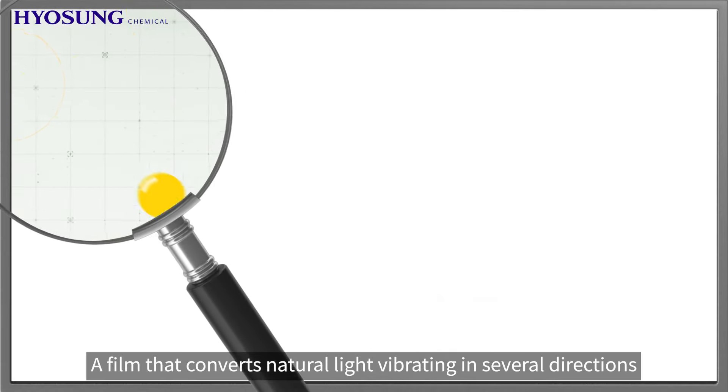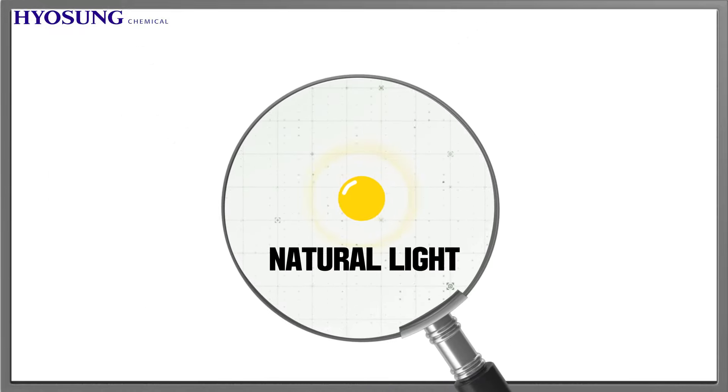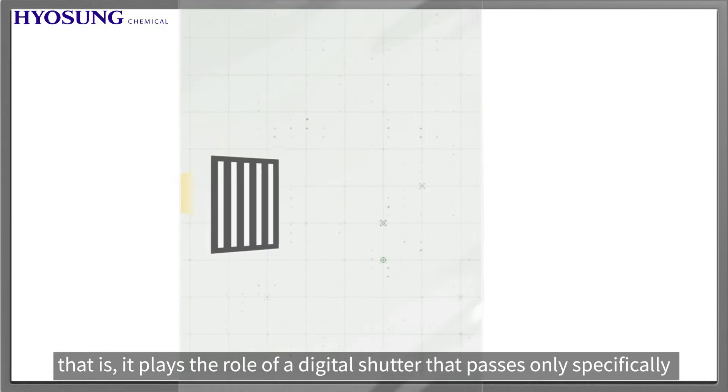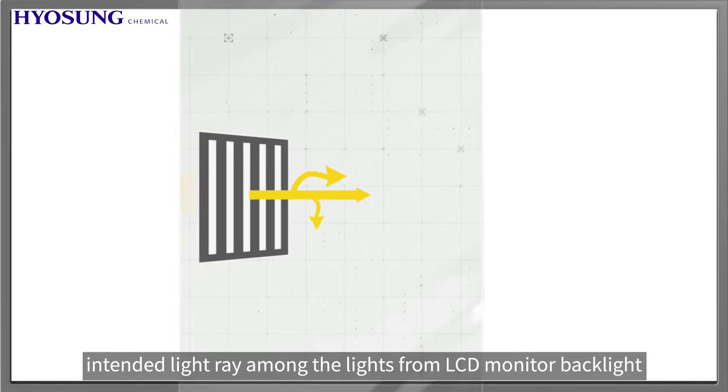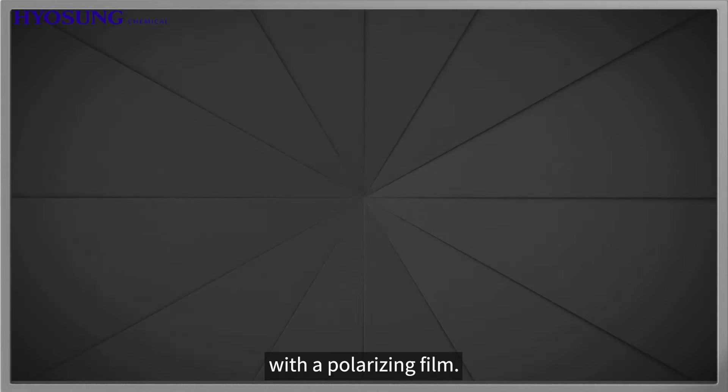A film that converts natural light vibrating in several directions into one direction. That is, it plays the role of a digital shutter that passes only specifically intended light rays among the lights from LCD monitor backlight with a polarizing film.